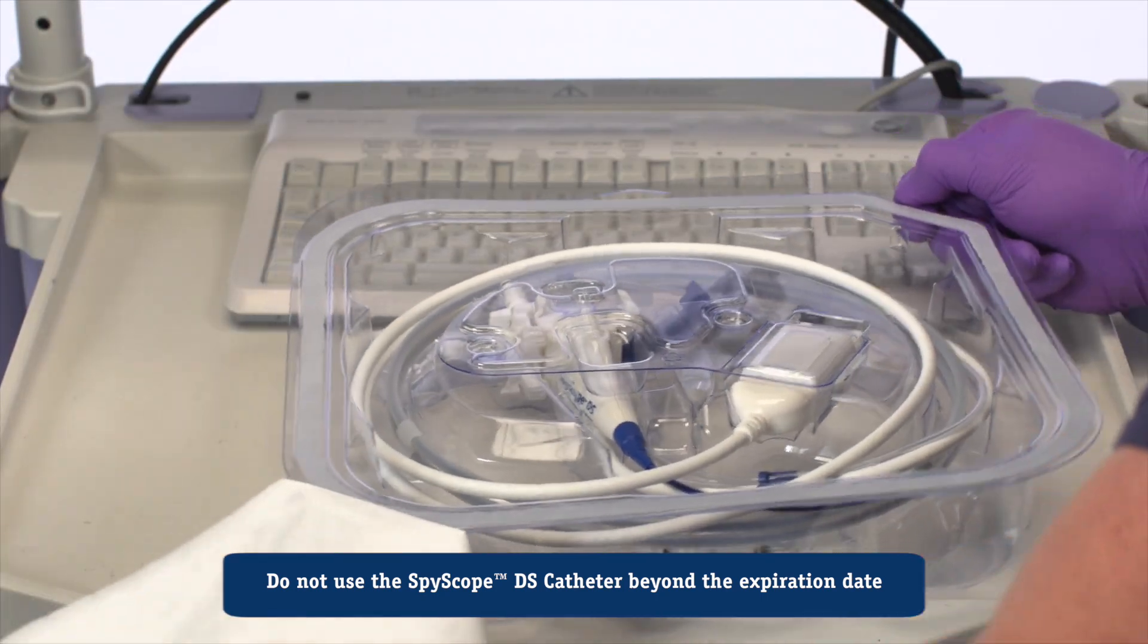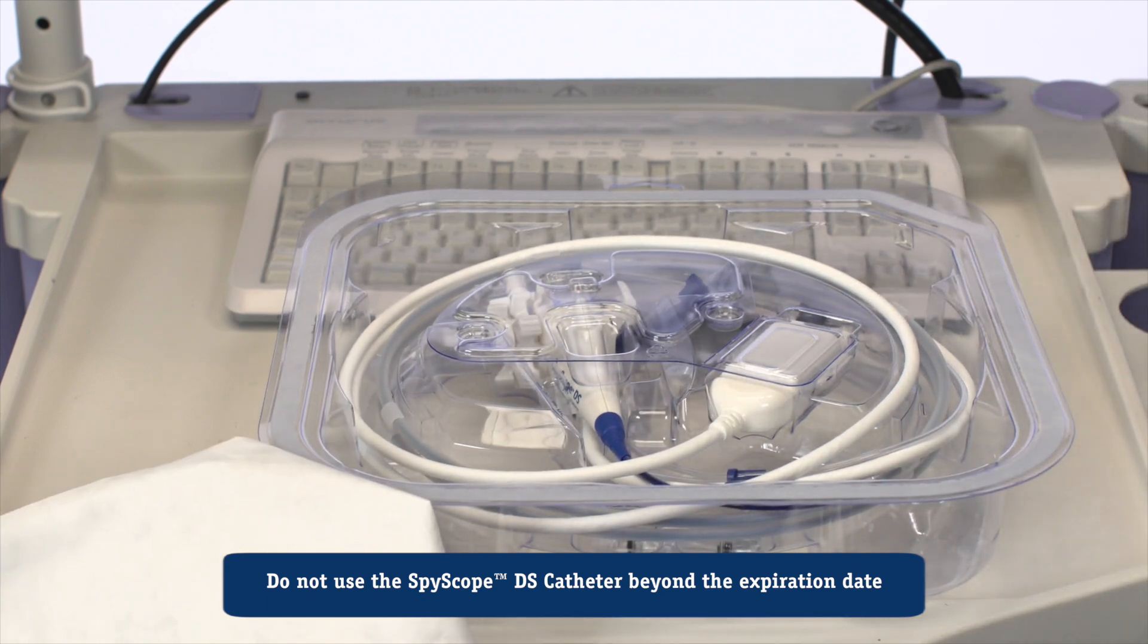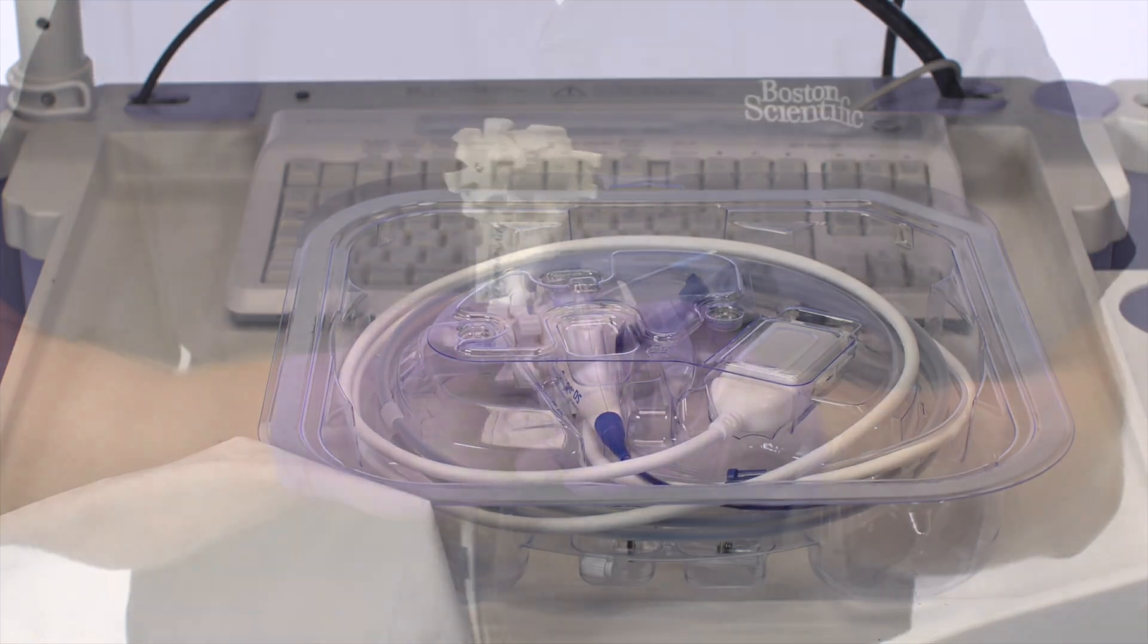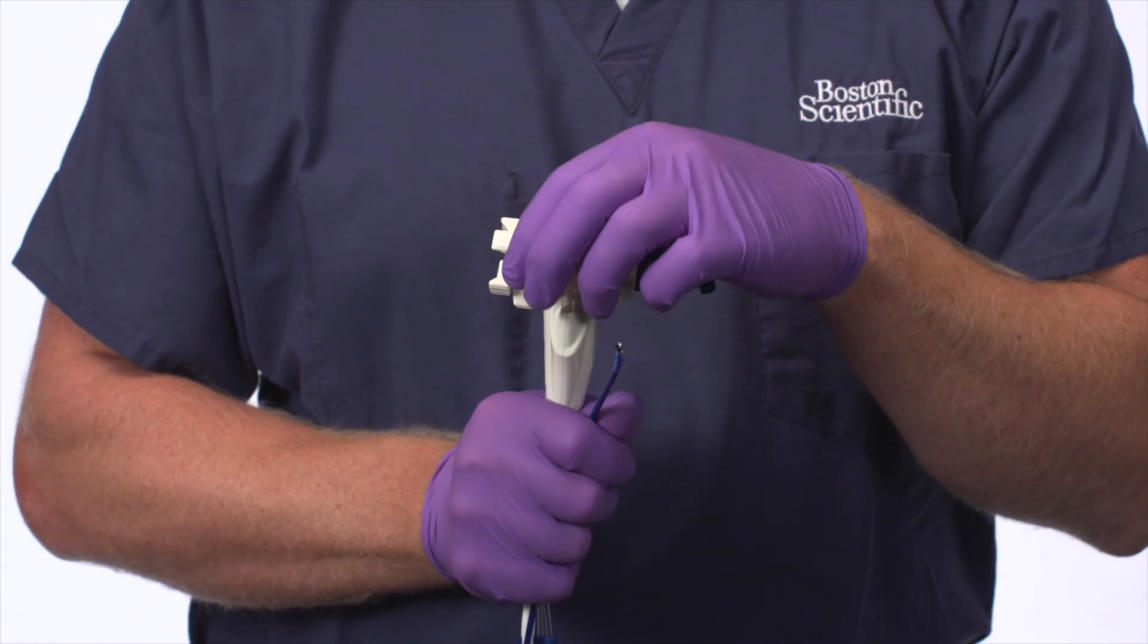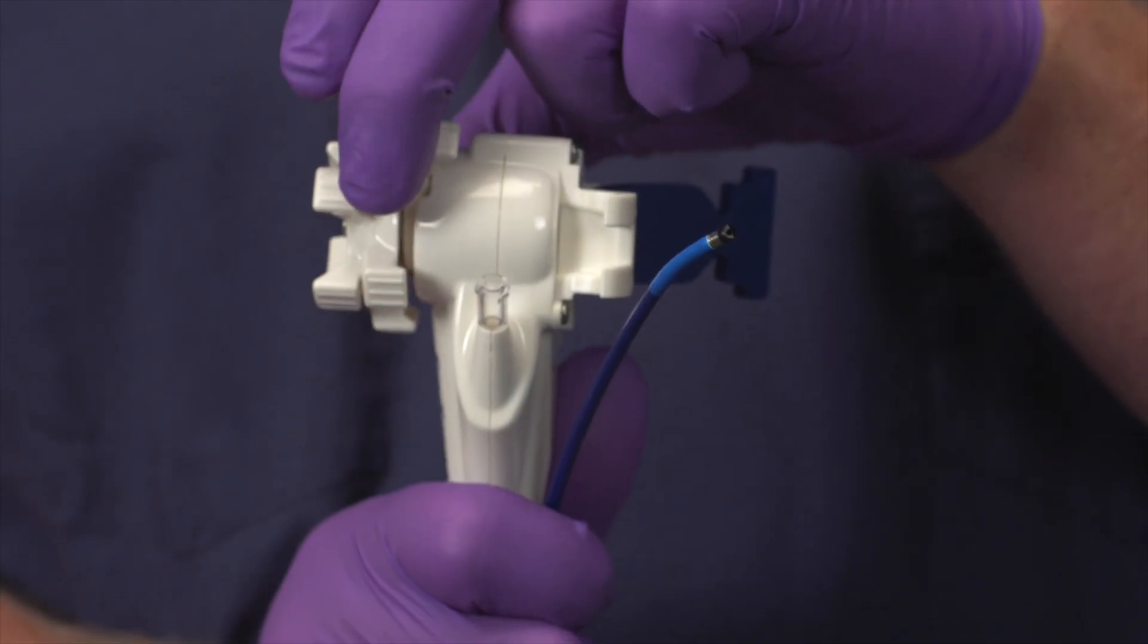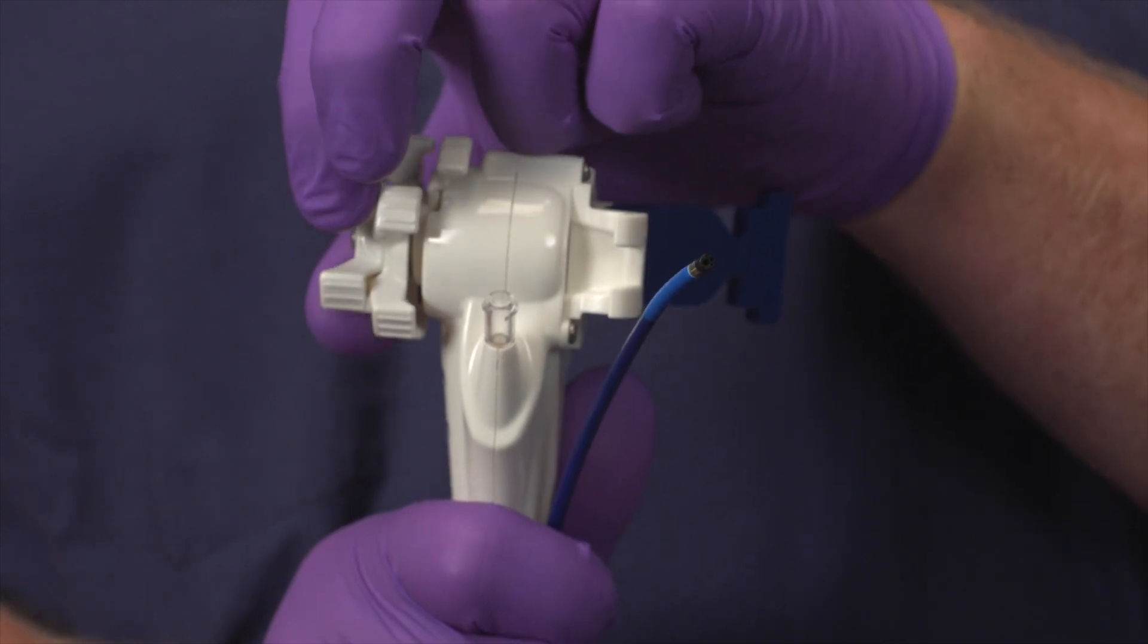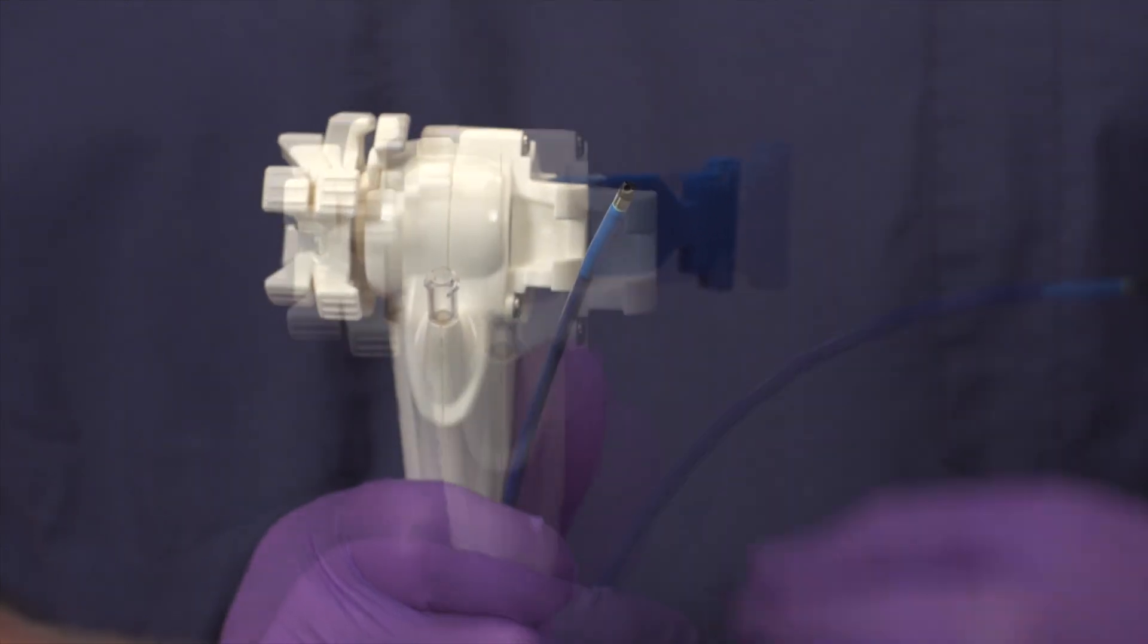Remove the device from the packaging and ensure no components are loose or broken. Rotate the articulation knobs located on the Spyscope DS catheter handle and visually confirm articulation of the articulating section while knobs are rotated.